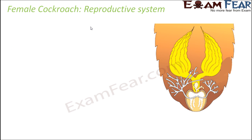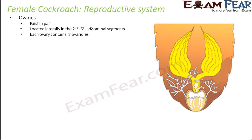Now for the female reproductive system: the female will produce eggs, receive sperms from the male reproductive system, fertilization will occur between the sperm and egg, and a new organism will be formed. The first organ is the ovaries — they exist in pairs, located laterally in the second to sixth abdominal segments. Each ovary is made up of around eight ovarian tubules, which contain the developing ova (eggs).